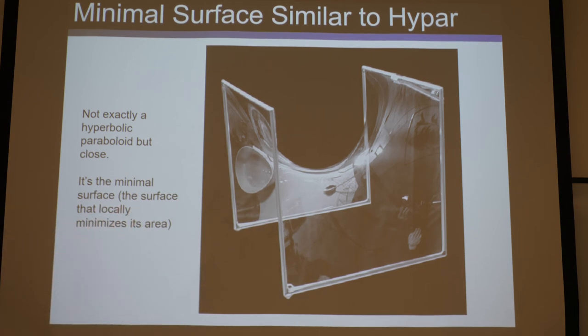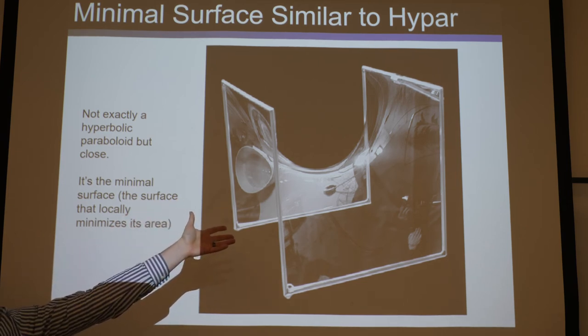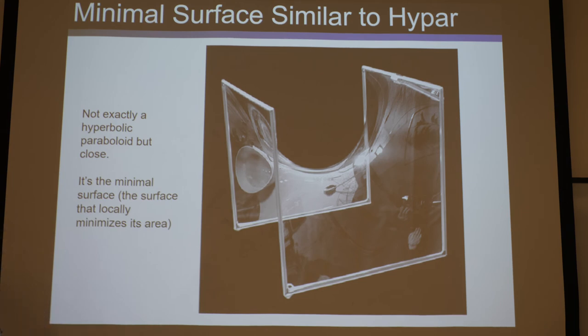So anyway, I don't want to get too much into that. But a lot of people will say this is a hyperbolic paraboloid and it approximates one. It's very similar to one, but it's mathematically, this minimal surface is slightly different than a hyperbolic paraboloid. And it uses different equations, much more complex equations to model this than the hyperbolic paraboloid. But it's close. So you might see a lot of people saying this is a hyperbolic paraboloid. Now you can correct them and say it's approximate, but it's not exact.